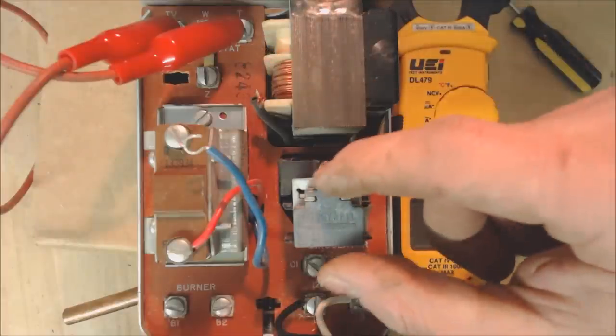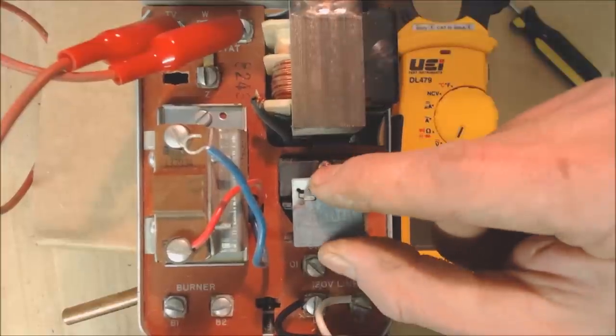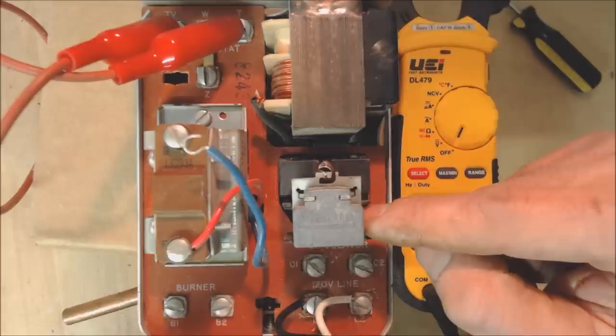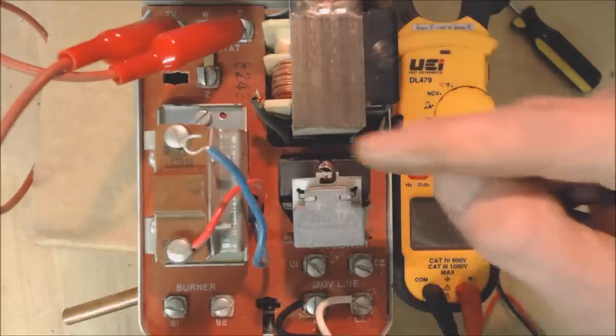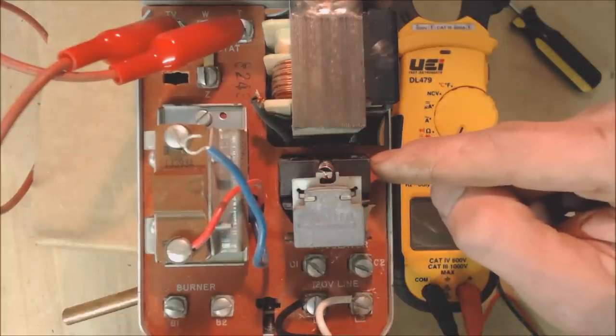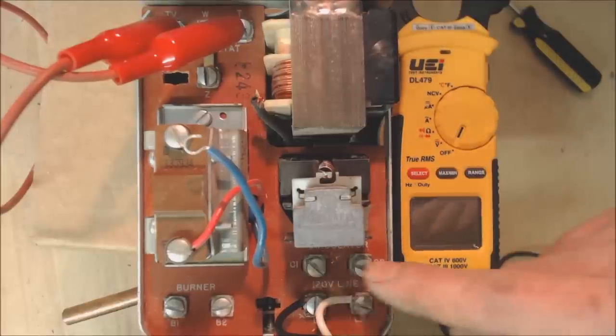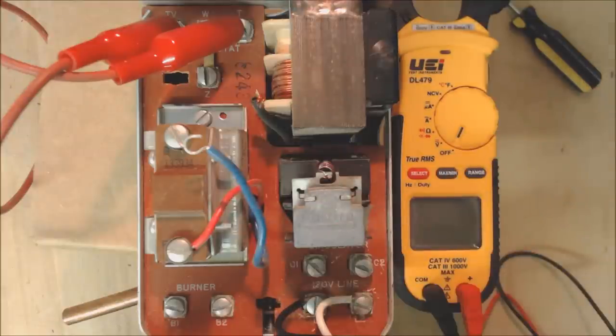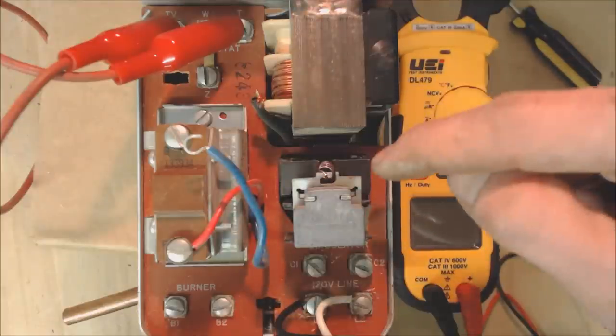Another thing that could go bad, and is more often bad than the transformer, would be this relay. Either the coil could be bad on it or the contacts could be bad. You could have a burnt connection on the circulator side or you could have a burnt connection on the 24 volt side. So there's two contacts on here - one 120 volts, one 24 volts.